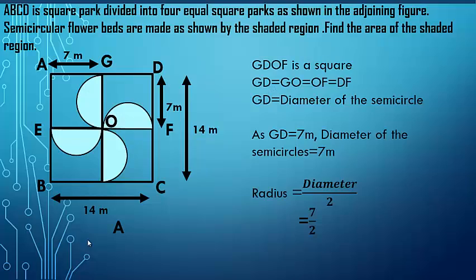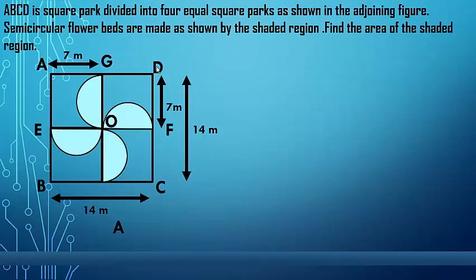ABCD is a square park divided into four equal square parks as shown in the adjoining figure. Semicircular flower beds are made as shown by the shaded region. Find the area of the shaded region.